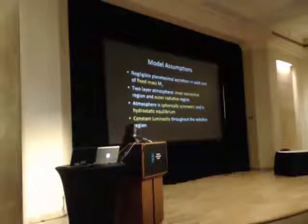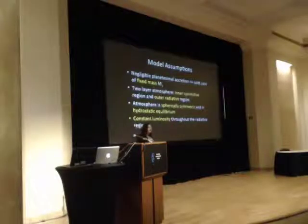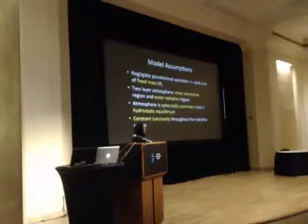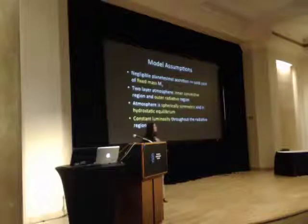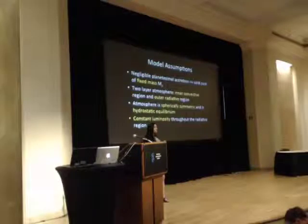Let's talk about the assumptions of the model. We're in a low planetesimal accretion regime, so the core no longer grows — it has a fixed mass. We assume a standard two-layer atmosphere composed of an inner convective region and an outer radiative region separated by the Schwarzschild criterion. The atmosphere is assumed to be spherically symmetric and in hydrostatic balance. One additional assumption is that the luminosity in the outer radiative region is constant.